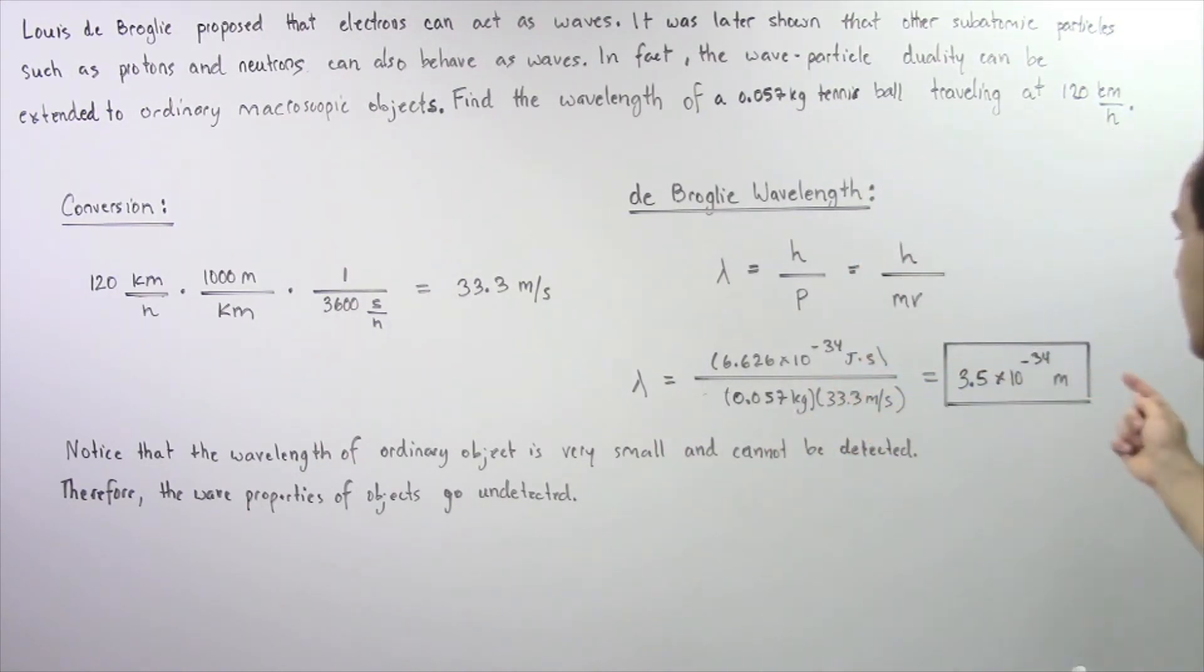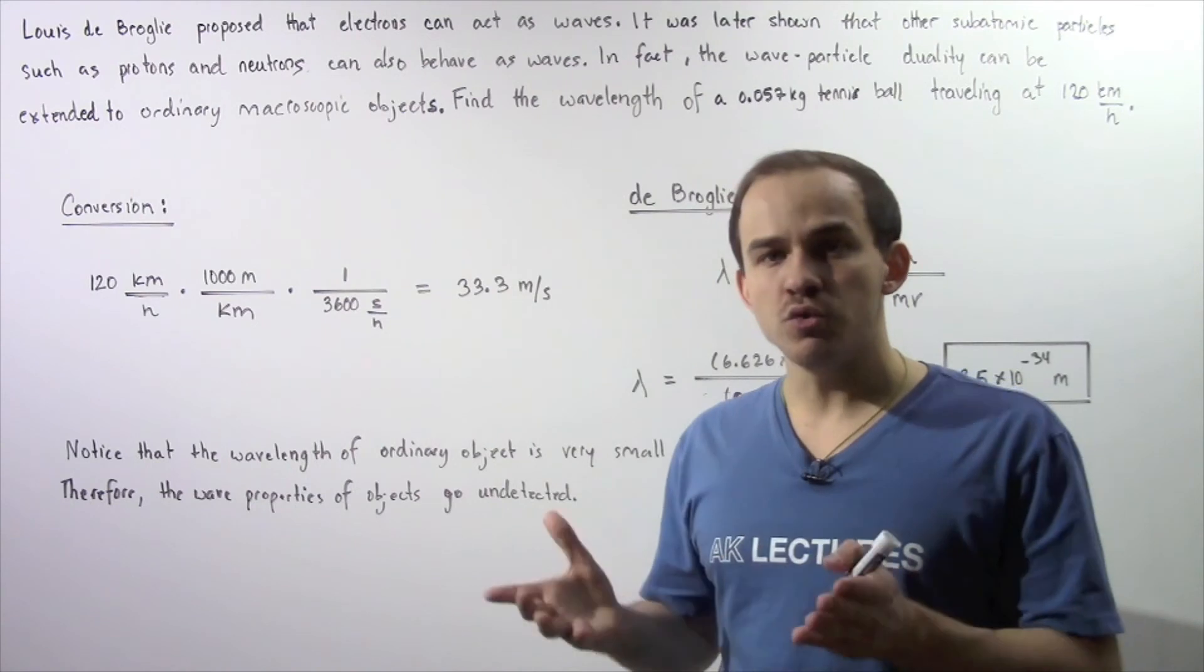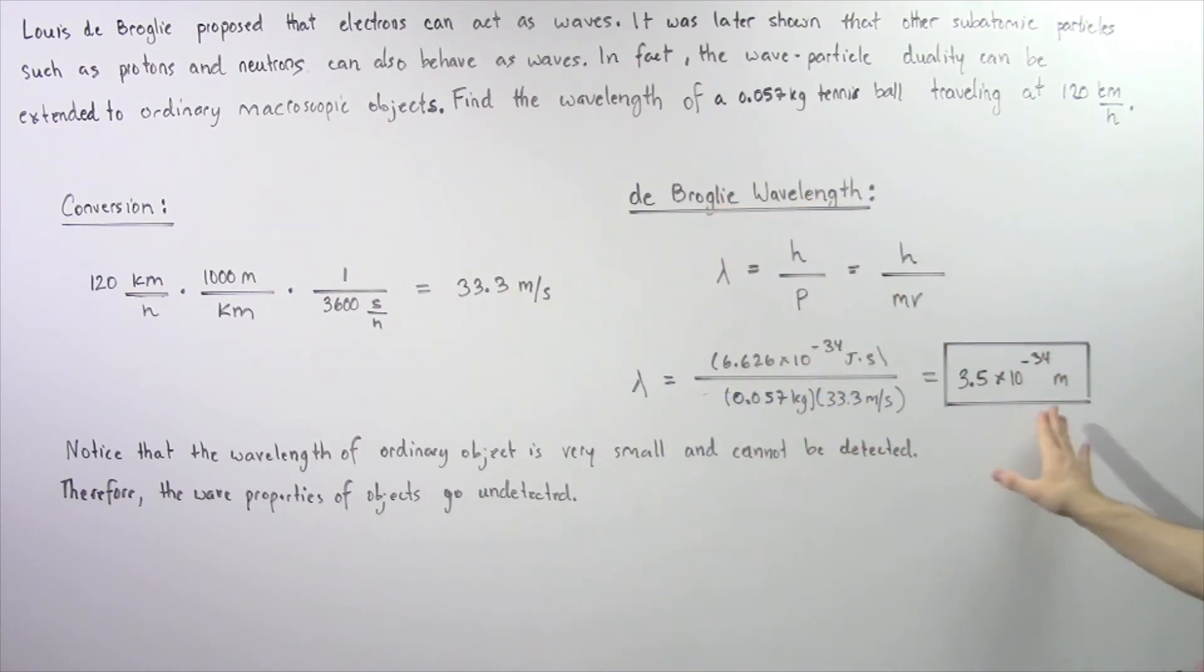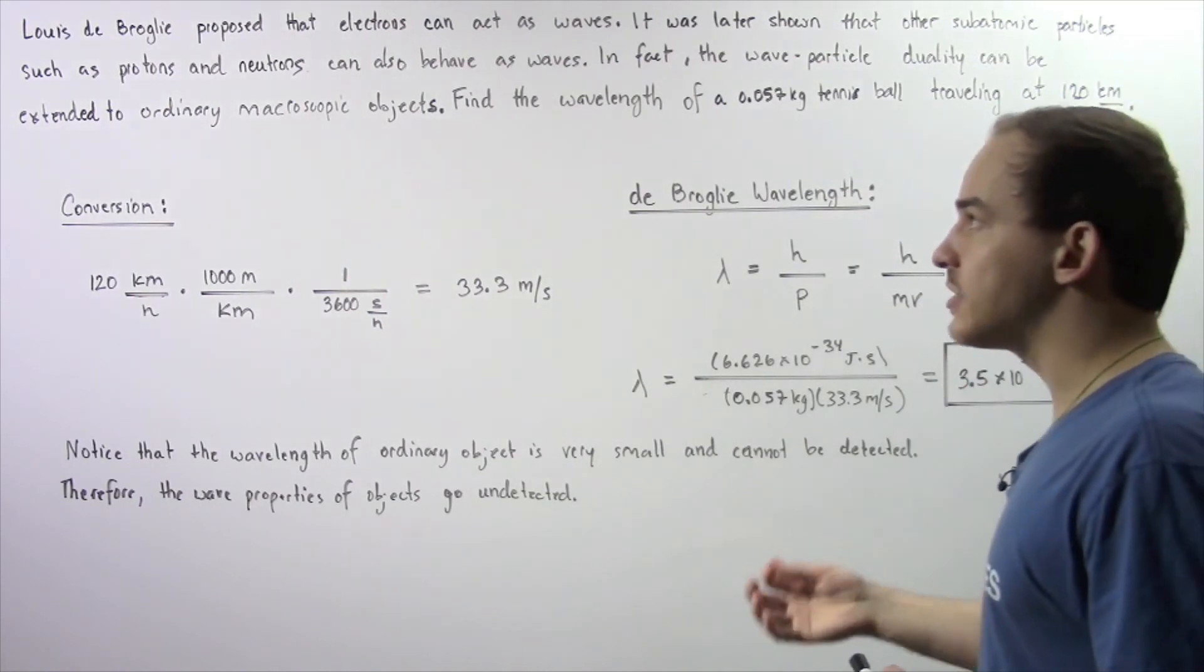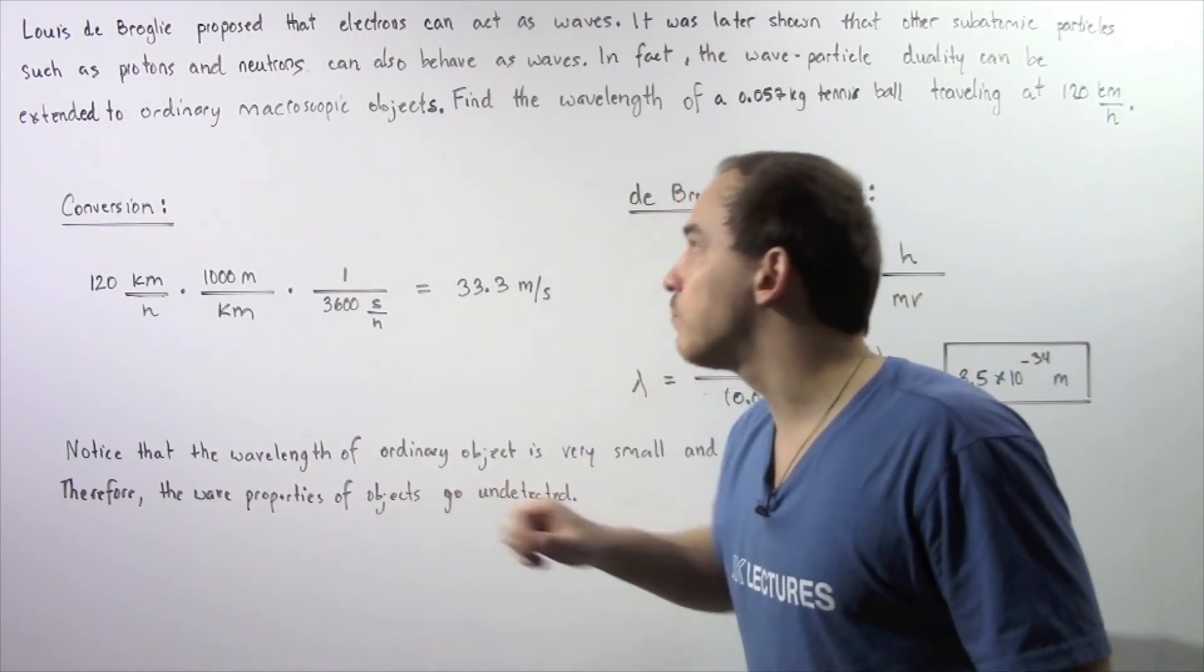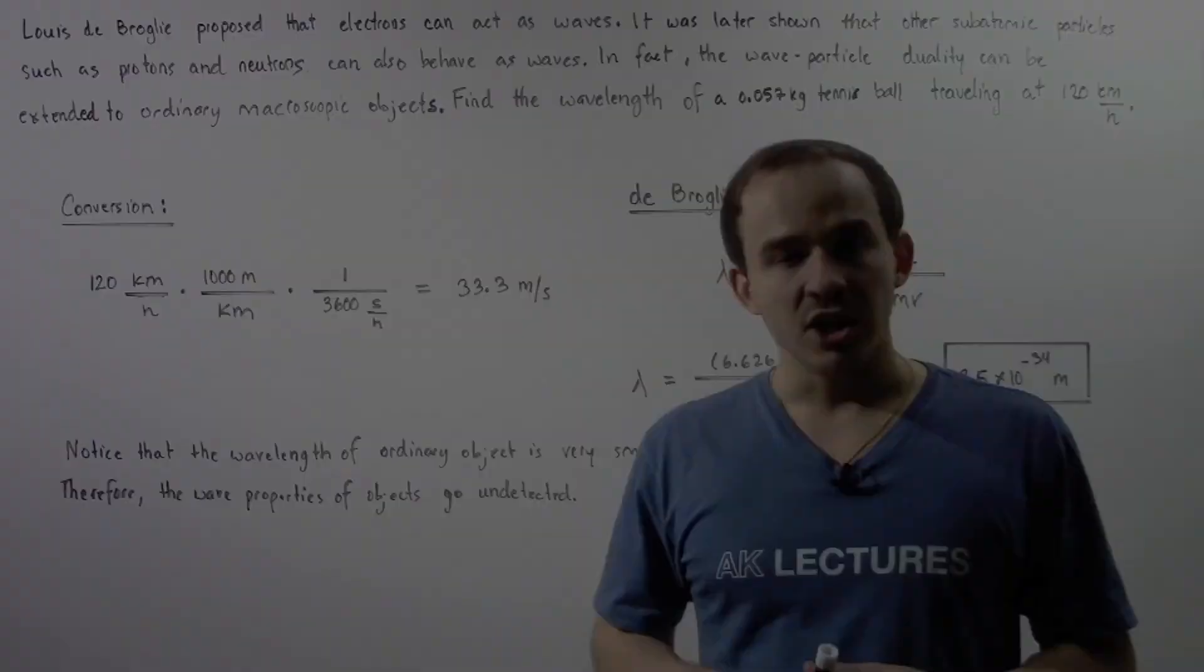So notice that this is a very small quantity. In fact, it's so small that we cannot actually measure or detect that using any type of instrument. And because of the small size of the wavelength of ordinary macroscopic objects, the wave properties of macroscopic objects go undetected.